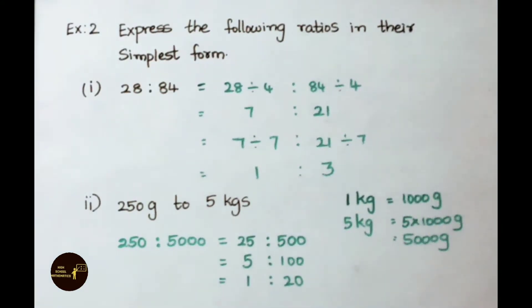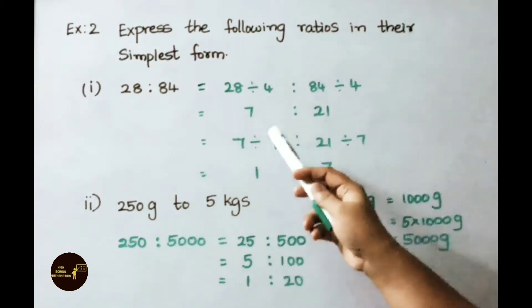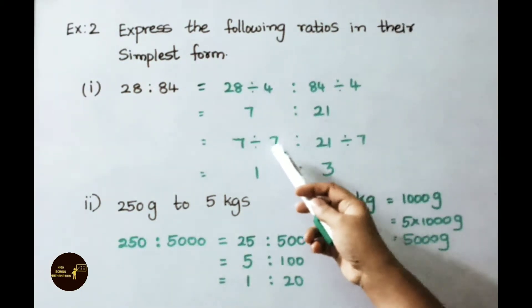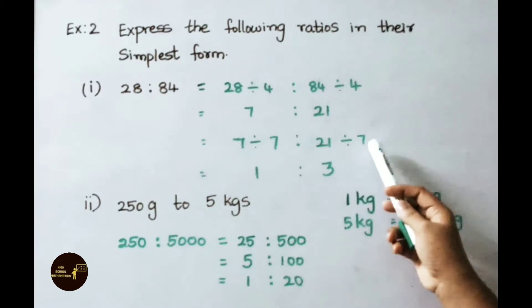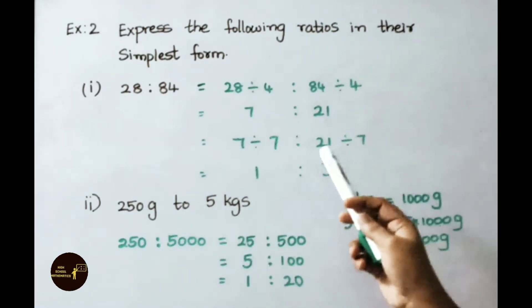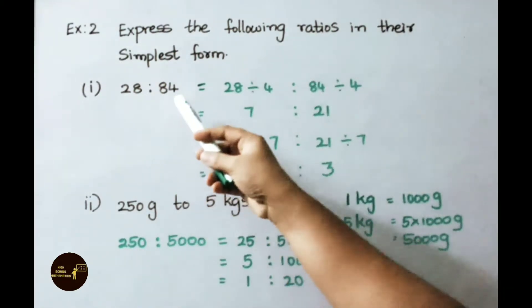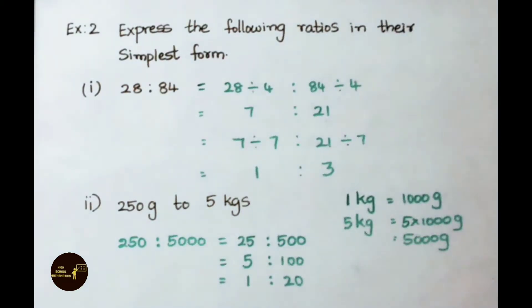This ratio further can be simplified by dividing the both terms with 7. 7 table 7 is 1 times. 7 table 21 is 3 times. Therefore simplest form of the given ratio 28 is to 84 is 1 is to 3.